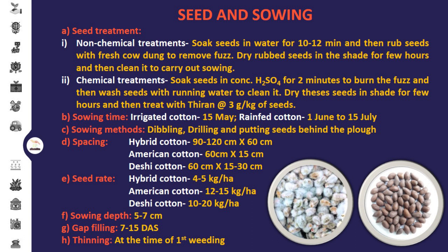Irrigated cotton is sown at 15th May, and rain-fed cotton sowing should be carried out within 1st June to 15th July. Dibbling, drilling, and putting the seed behind the plow are the sowing methods of cotton. For hybrid cotton, the spacing is 90 to 120 cm by 60 cm. The spacing for American cotton is 60 cm by 15 cm, and for desi cotton the spacing is 60 cm by 15 to 30 cm. The seed requirement for hybrid cotton is 4 to 5 kg, for American cotton 12 to 15 kg, and for desi cotton 10 to 20 kg per hectare.